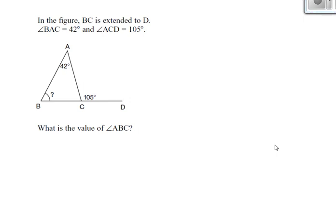It says in the figure, BC is extended to D. So BC is a line segment that goes from B to C, and it's extended further until it hits point D. BC continues on until D, so that's a straight line. Then it says angle BAC—if you trace from B to A to C, you've traced out an angle. That angle is 42 degrees. Similarly, if you trace out angle ACD from A to C to D, you've traced out angle 105.